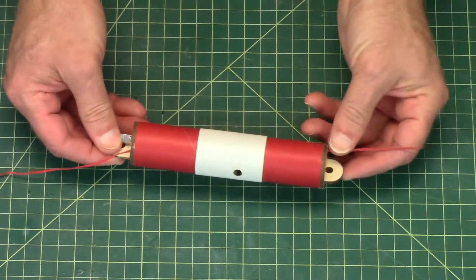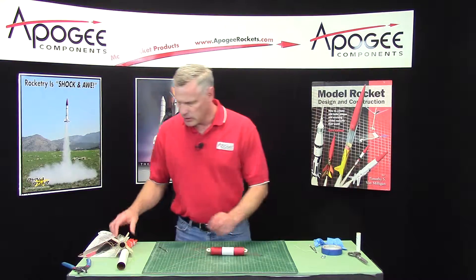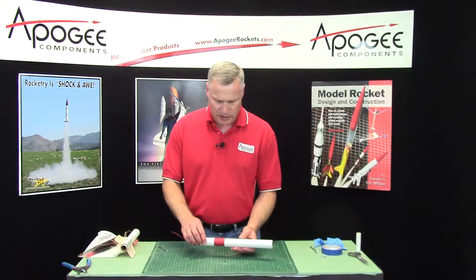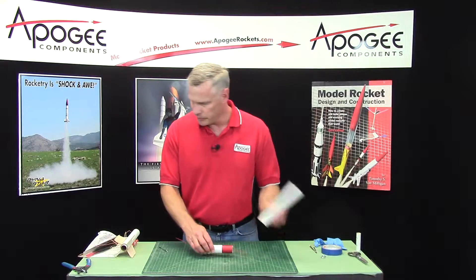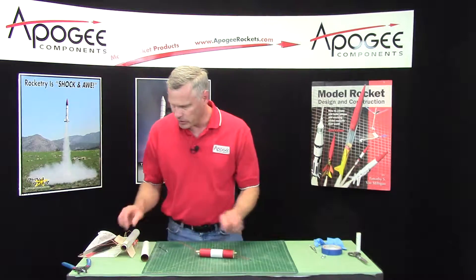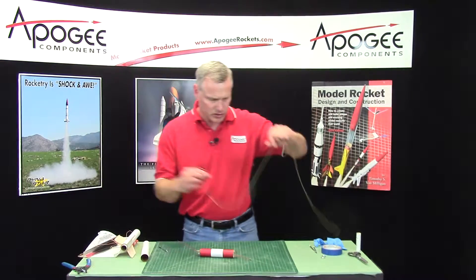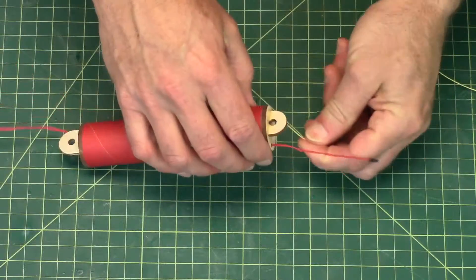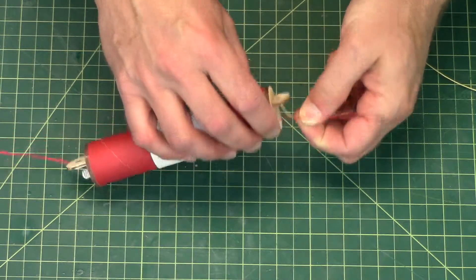Alright. Now, this is going to go into the front of the rocket like that. So we need a shock cord attached to this end. So I'm going to tie a shock cord here.